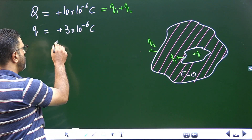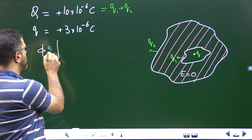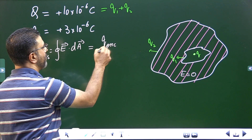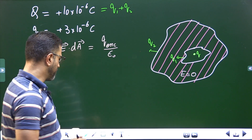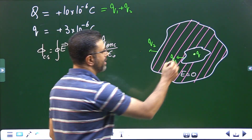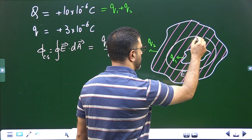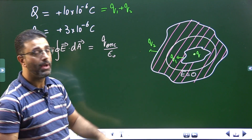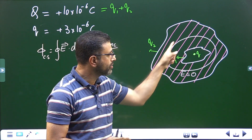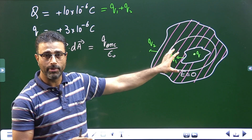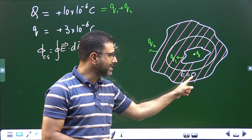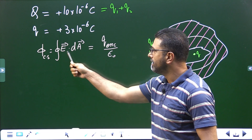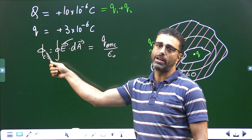Gauss Law states that the flux through a closed surface — the integral of E dot dA over a closed surface — equals Q enclosed divided by ε₀. I will consider a Gaussian surface lying entirely inside the meat of the metal, whatever its shape. Since every part of the Gaussian surface is inside the metal where field is zero, the integral is zero, meaning the flux through that closed surface is zero.